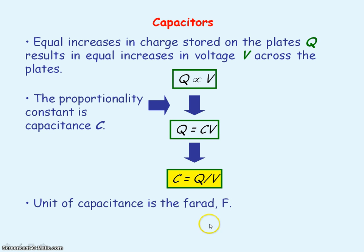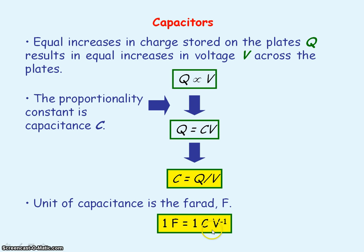You need to know the definition of the unit, the farad, which comes from the definition of capacitance. A farad is equal to the unit of charge, coulombs, divided by the unit of voltage, volts. So one farad equals one coulomb per volt. One farad is the capacitance when one coulomb of charge is stored per volt across the capacitor.